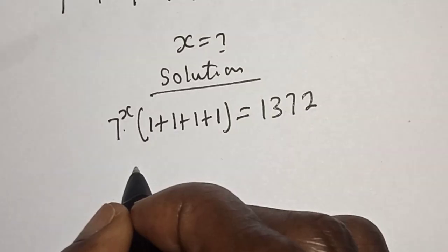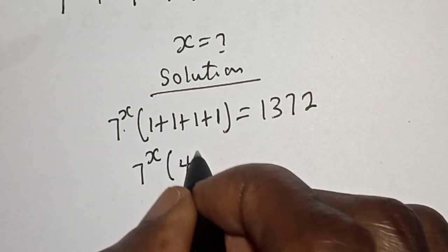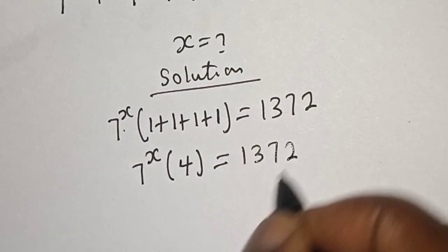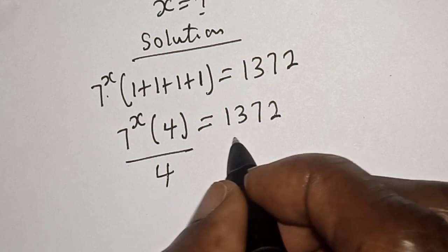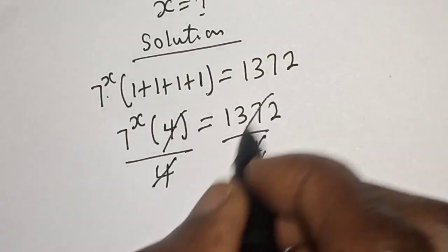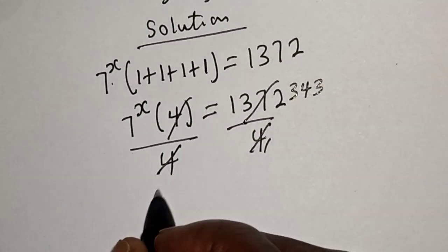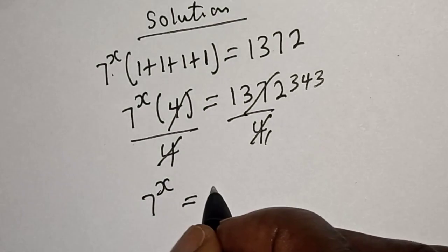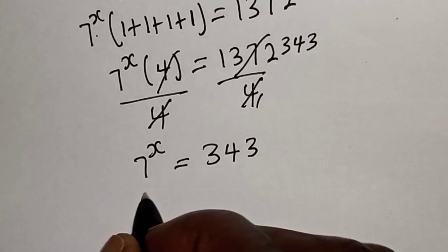Then we have 7 raised to power s, bracket 4, is equal to 1372. Let's divide both sides by 4. This four will cancel, leaving 343. Then we have 7 raised to power s is equal to 343.